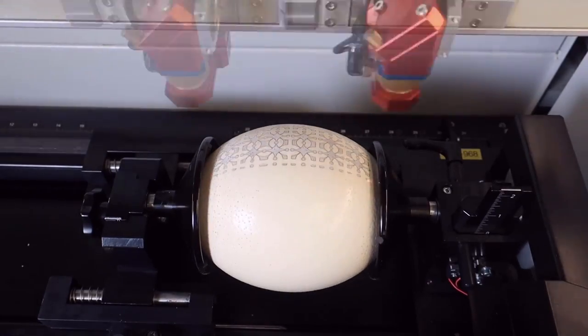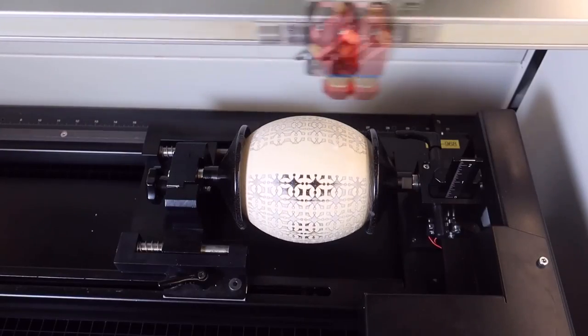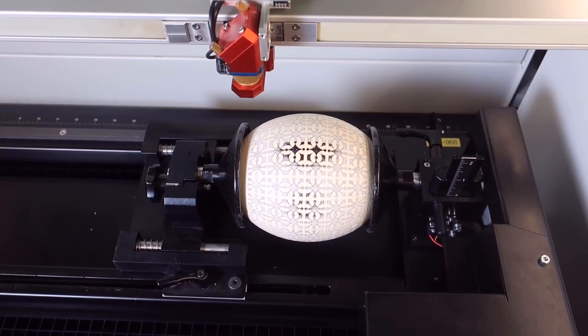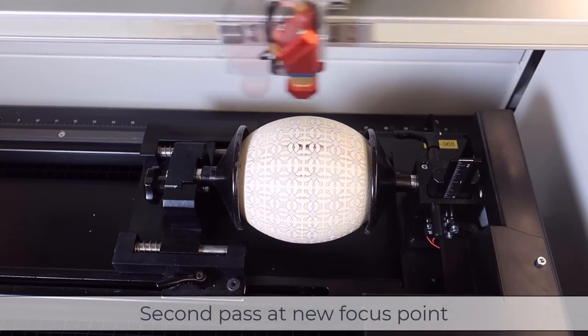In order to remove the black spotting from our first pass we then reset our focus to our newfound ideal Z height and run a second one. It can be very difficult to find the perfect focus point on an object with this much curvature which is specifically why we've chosen to use a four inch lens which provides a much greater overall tolerance.